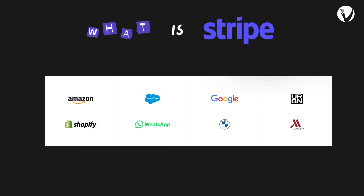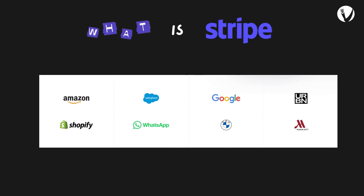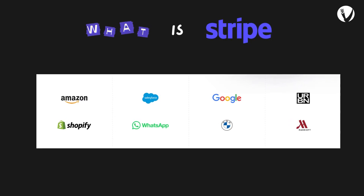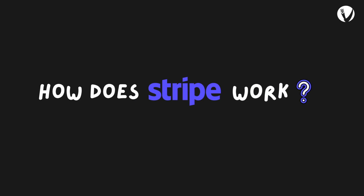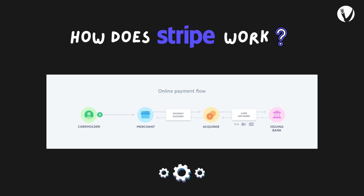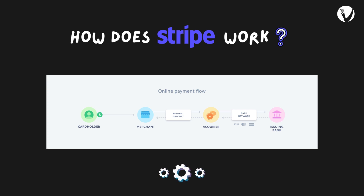Stripe's payment processing platform is used by Amazon, Shopify, Salesforce, Google, and more. How does Stripe work? Stripe essentially works as an intermediary between your customers' payment methods and your business bank account. It's a flexible platform that supports seamless no-code integration into whatever website or platform you're using, but it also gives you the ability to code your own custom point of sale.